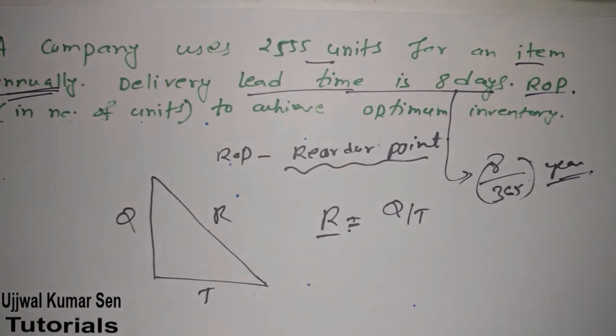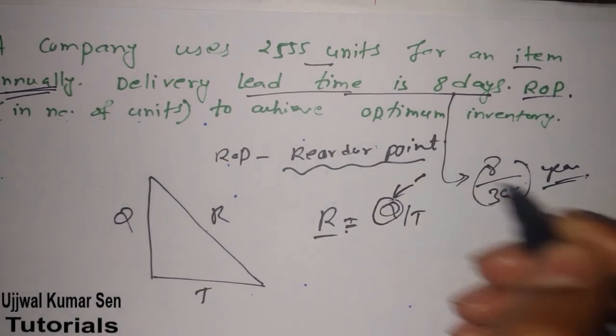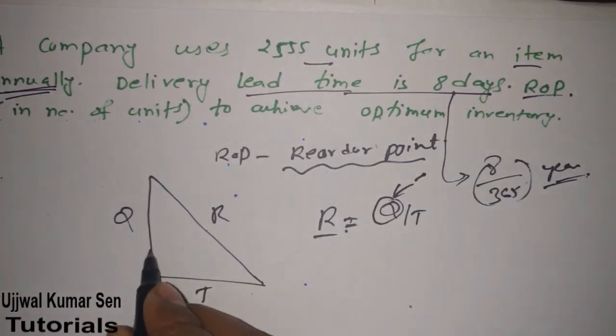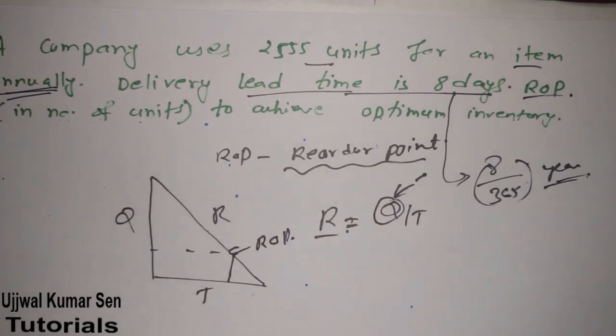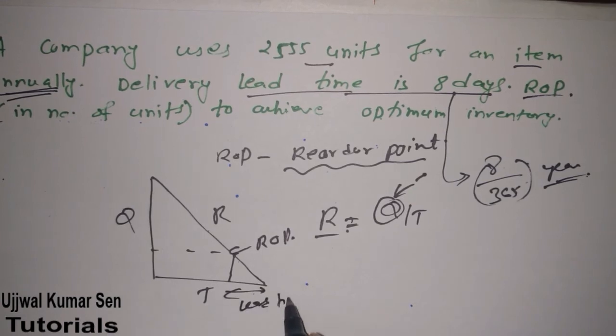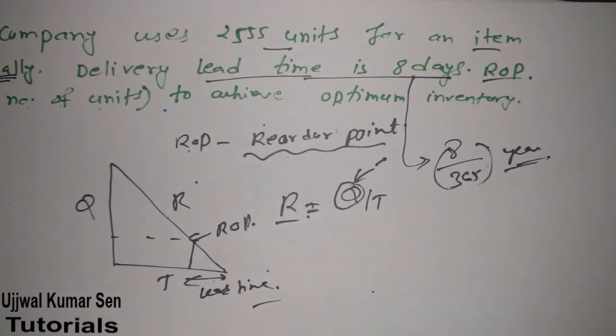What is the reorder point here? This Q is the reorder point, also known as ROP. And this is the lead time. Now we have to find Q. Q equals T times R.